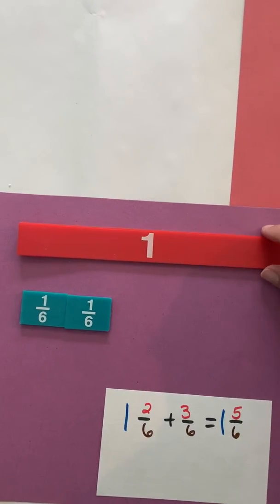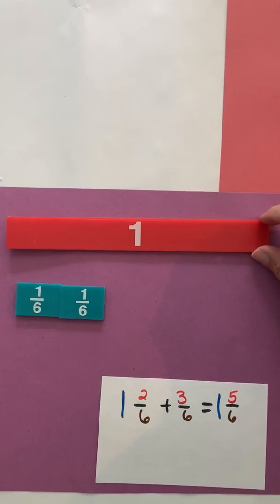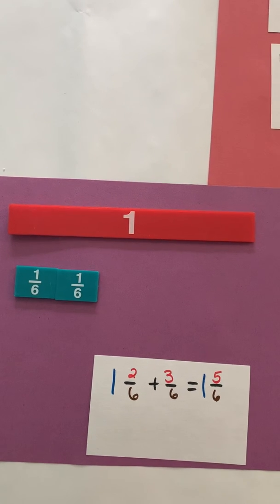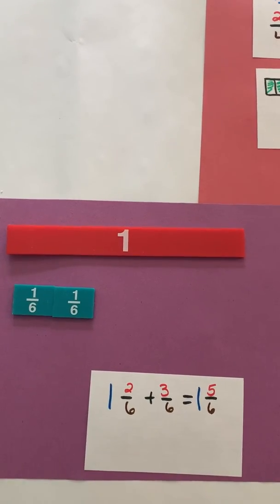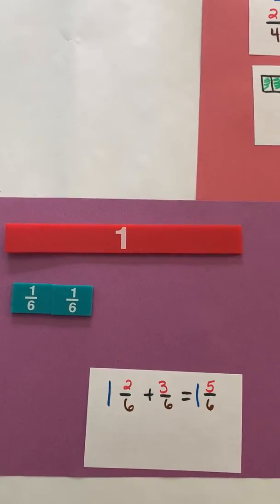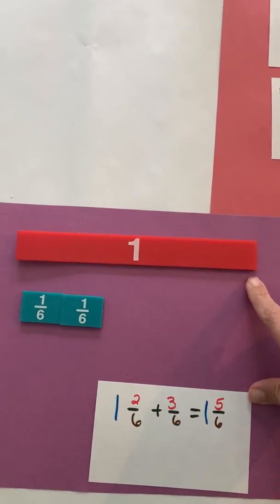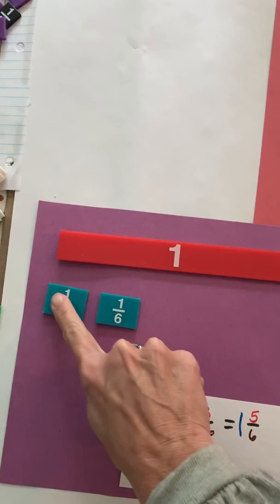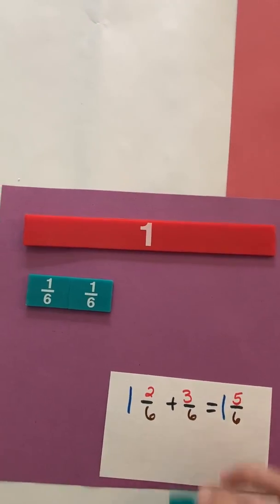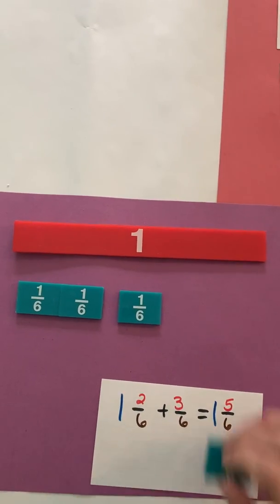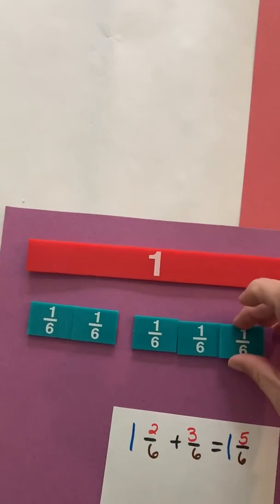So first of all, I want to represent, these are my manipulatives I'm going to use. You can take construction paper and cut out your different fractional parts. You can use online manipulatives as well to help with this. So I have one and two-sixths, and then remember adding means I'm going to join. So I'm going to add on three-sixths. I'm going to add on one-sixth, two-sixths, three-sixths.